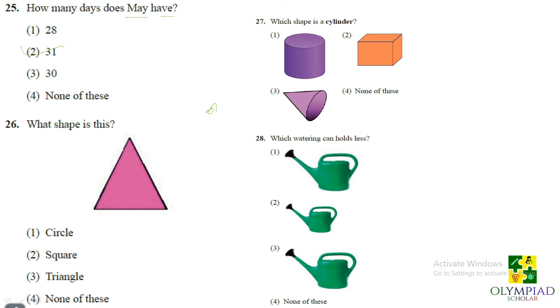What shape is this? So this has got 3 sides and it is a closed figure. So you can say that this is a triangle. So it is present in option 3.